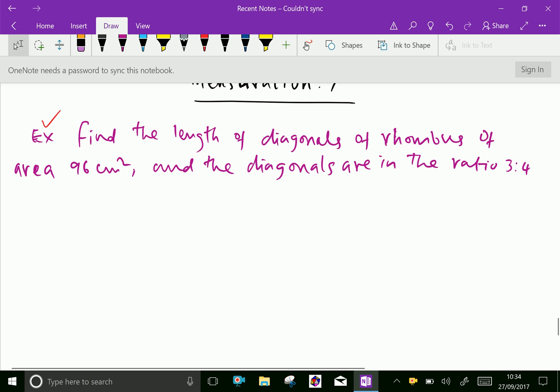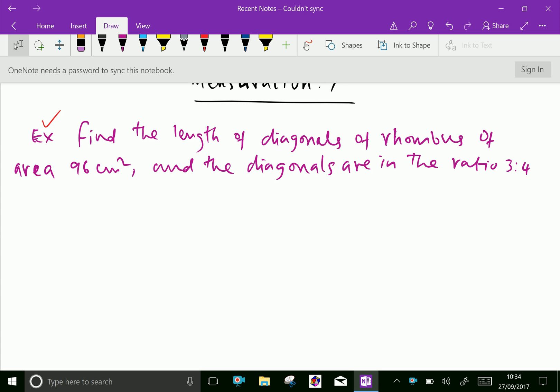Example: Find the length of diagonals of a rhombus of area 96 cm squared, and the diagonals are in the ratio 3 to 4.